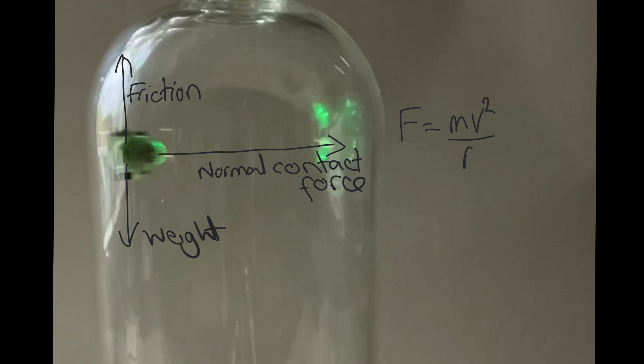But as the normal contact force gets bigger, the friction will also get bigger. You can experience this if you push down on something and then try and slide it along. It's much harder because when you're pushing down on it, you're increasing the amount of friction. So provided the car is going fast enough, the friction will be large enough to balance the weight and the car will be able to go round in a horizontal circle.